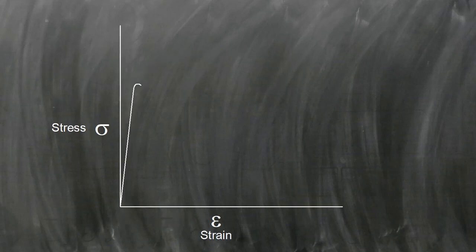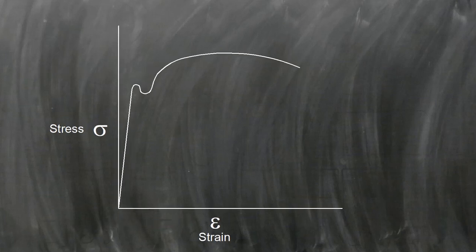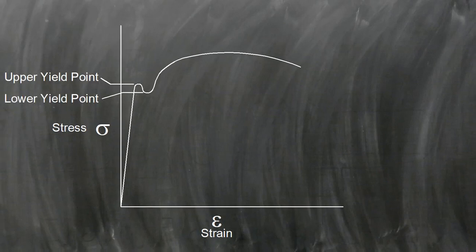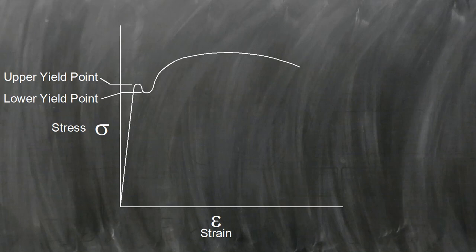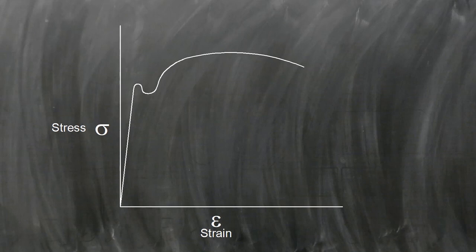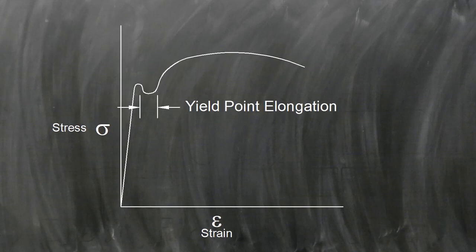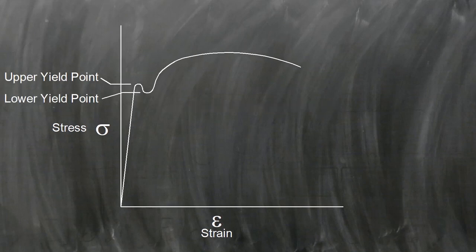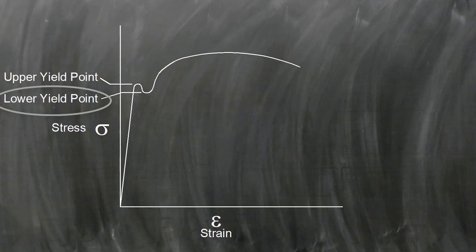Some metals exhibit strange behavior at their yield point. This mild steel, for example, has an upper and lower yield point. As the specimen is pulled apart, there's a period of time when the part strains or stretches without building up any additional stress. This is called yield point elongation. For materials with upper and lower yield points, the lower yield point is often used for design calculations.